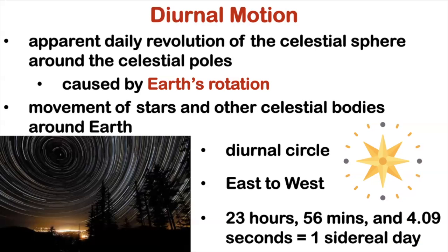We also have what we call the annual motion. So based on the word annual, it's by year. This is the apparent yearly movement of the stars as observed from the Earth. This one is caused by the Earth's revolution. Again, diurnal, caused by Earth's rotation, annual, caused by Earth's revolution.